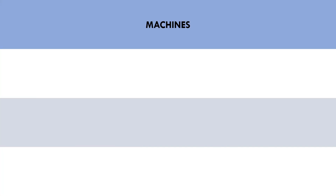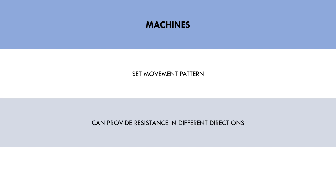Machine-based exercises, on the other hand, are those which involve lifting with a system that has a set movement pattern. These lifts can only be moved in a specific way, and are usually built to target a specific muscle or group of muscles. Unlike free weights, machines provide resistance in many different directions and patterns.